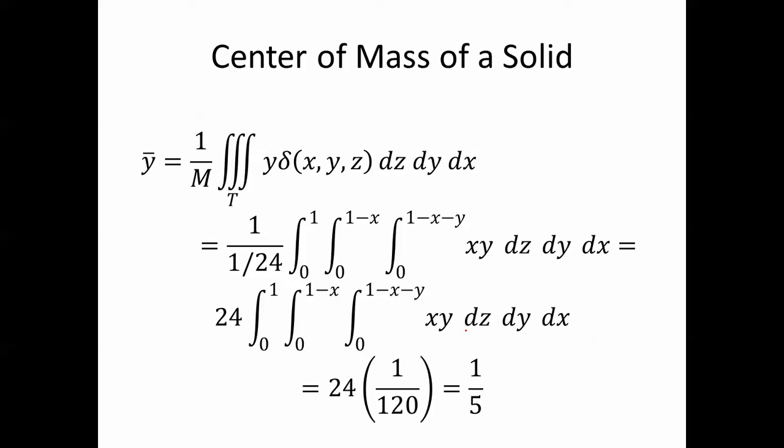In the same way, y bar is 1 over m times the triple integral of y delta of xyz. m is 1 24th, so we have 1 over 1 24th, same limits of integration. y times delta is going to be y times x. 1 over 1 24th is 24, and this integral turns out to be 1 120th. And so we have 24 times 1 120th, which is 1 5th.